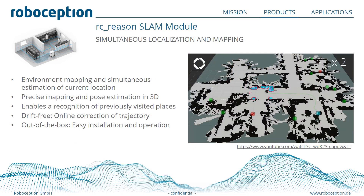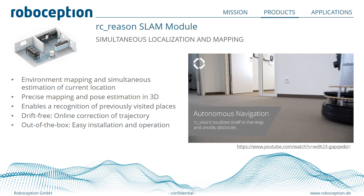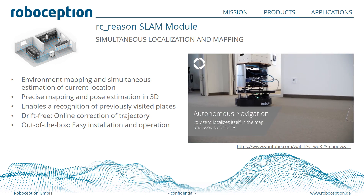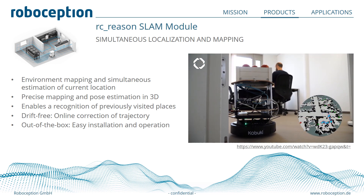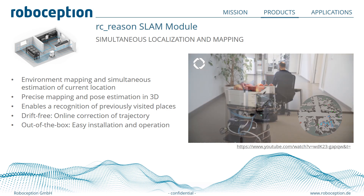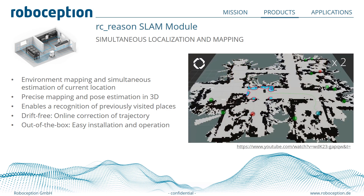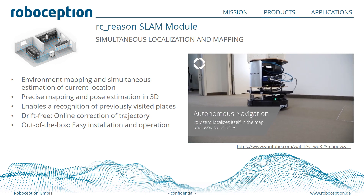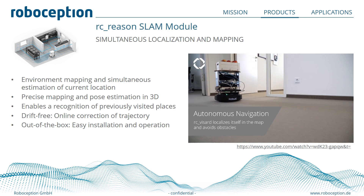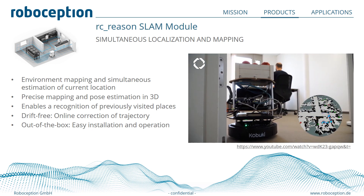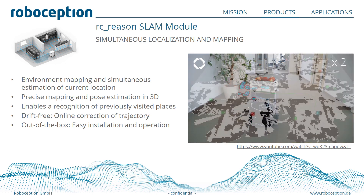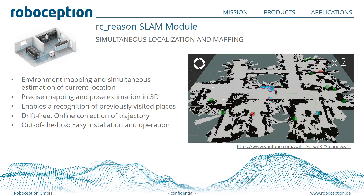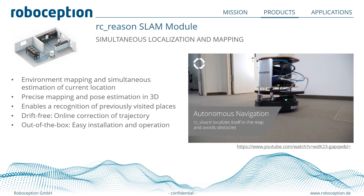The SLAM module is made for mobile robots. When navigating through a scene, the visual odometry included in the RC Wizard's base package accumulates drift over time. The SLAM module helps localize exactly and reduce this drift by using previously seen features. As opposed to classical laser-based SLAM, we use the full 3D information of the environment, which can also be used for collision detection — not only in one plane but in the full 3D space in front of the robot.